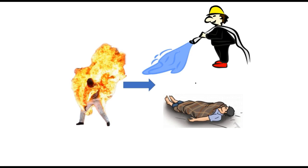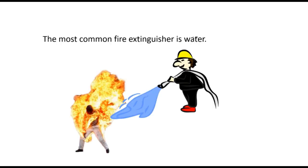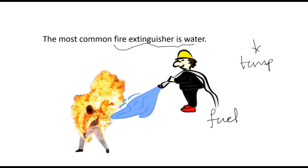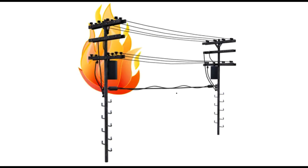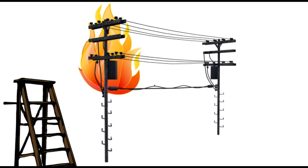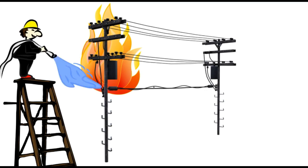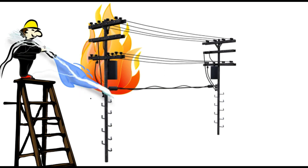The most common fire extinguisher is water. Water brings down the temperature and doesn't allow the fuel to reach its ignition temperature. But water cannot be used in all cases. For example, in an electrical fire, water being a good conductor of electricity creates the risk of electrocution — the person will get an electric shock, which must be strictly avoided.